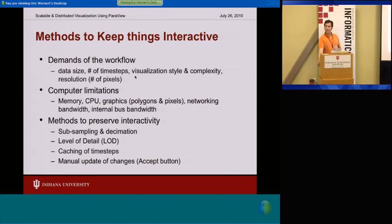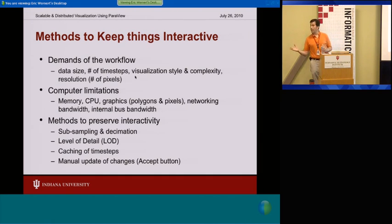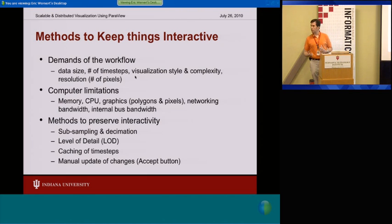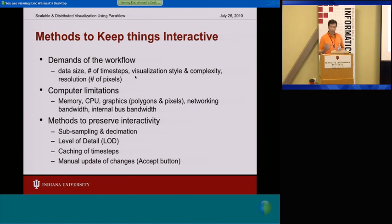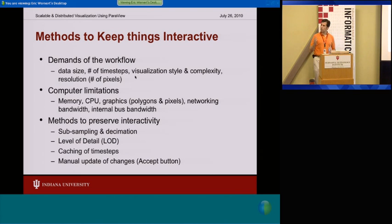To preserve interactivity, ParaView tries to do things like subsampling the data set — in some cases it doesn't try to render all the data. You need to be aware of that so that if you do want to see all the data, you know where to find the hooks in the program to turn off those flags. Level of detail: when you're not moving there's no problem, and it can render at full resolution, but as soon as you start moving it automatically tries to drop you to a lower resolution. The goal by default is to keep interactivity high.